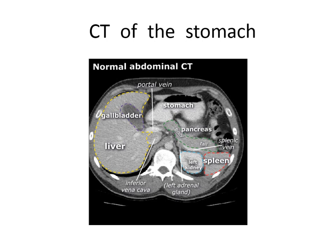On CT of the stomach in cross-section, we see the stomach with the pancreas posterior to it, the left kidney and left adrenal (inverted Y-shape), the spleen, the anterior abdominal wall, and the left lobe of the liver anterior to the stomach.